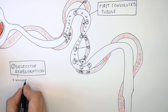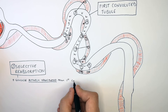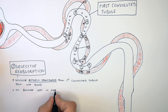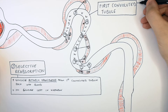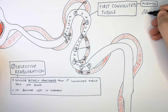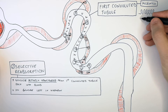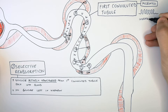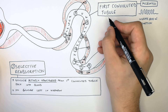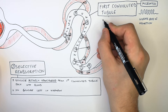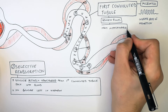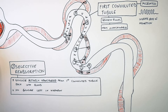During selective reabsorption, glucose is actively transported from the first convoluted tubule back into the blood — no glucose should be left behind in the nephron. The first convoluted tubule also has microvilli which increase its surface area, causing an increased rate of active transport of glucose. Because of this active transport, there need to be many protein pumps in the membrane as well as many mitochondria to produce the energy required.